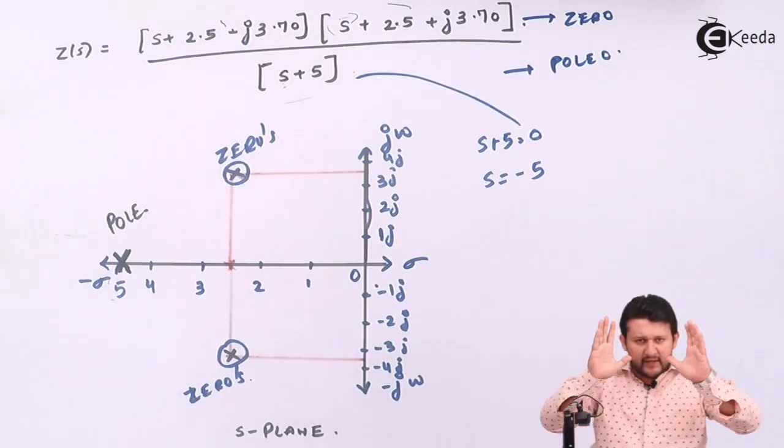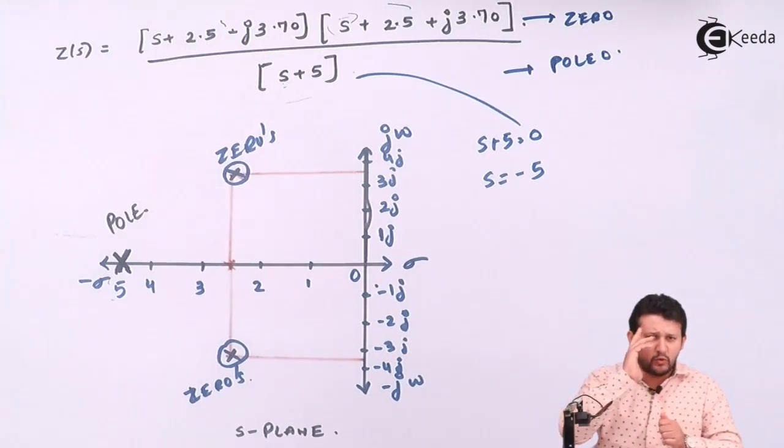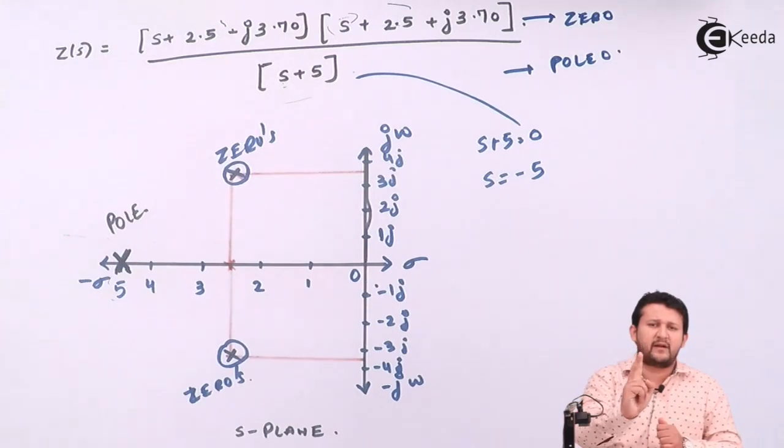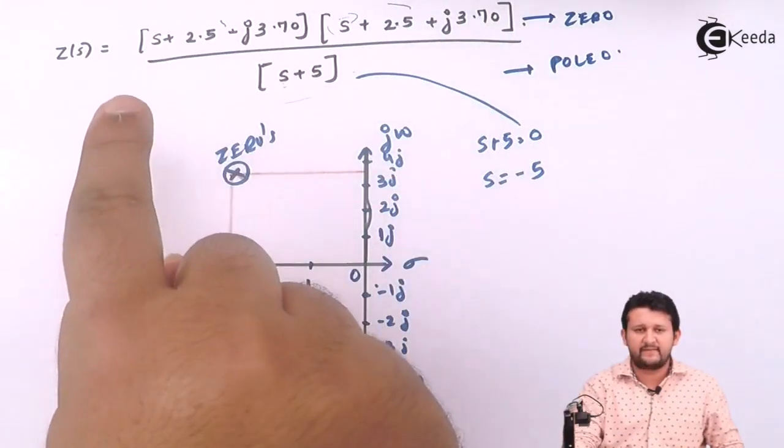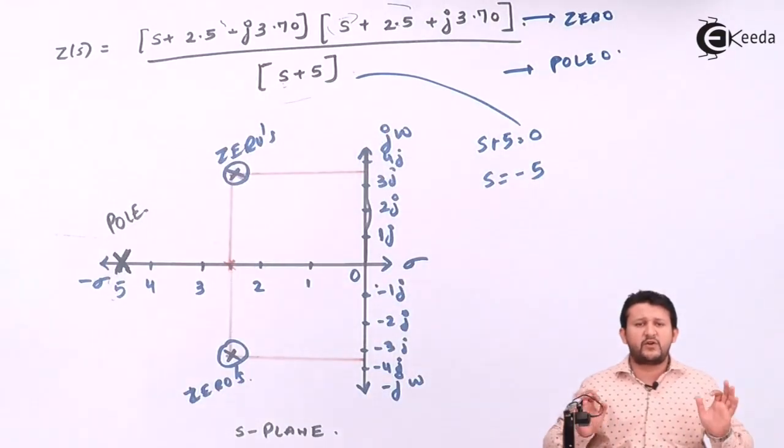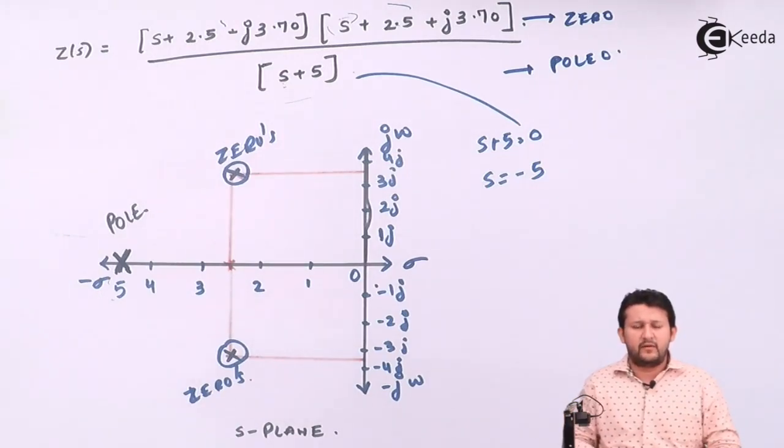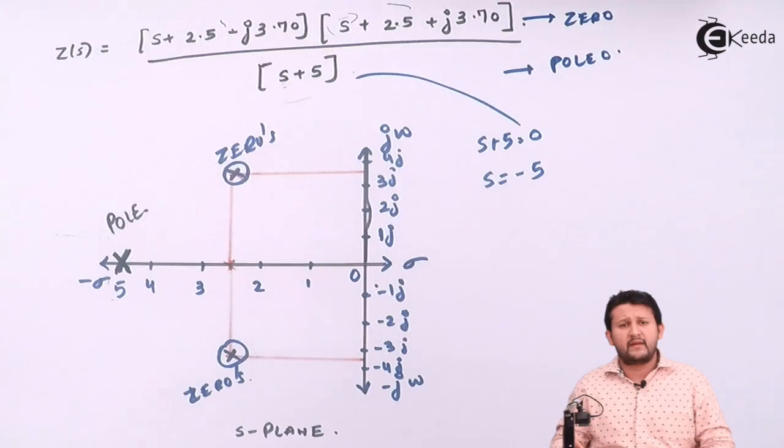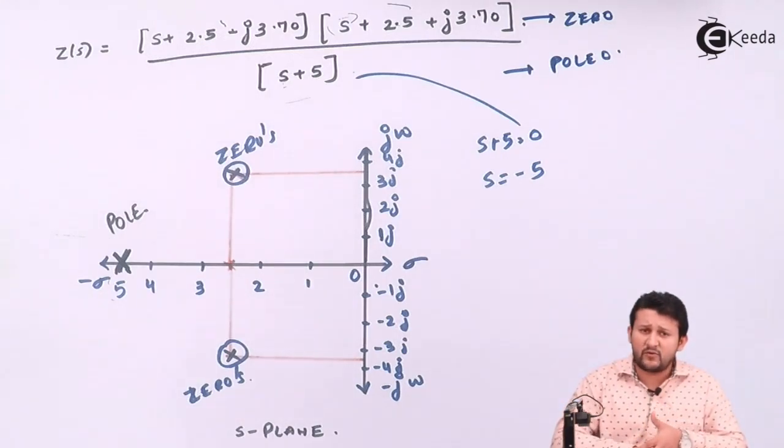For reducing Z(s), two things: series and parallel combination. After reducing it, you get the value for Z(s). After getting the value of Z(s), you need to find the value for s. For who? Numerator plus denominator. After finding the value for s, what about them? I need to find the value for poles as well as zeros.